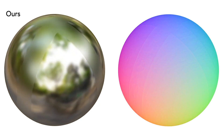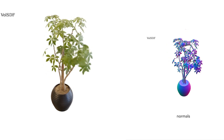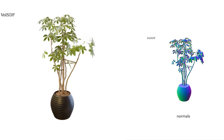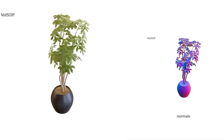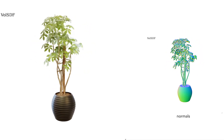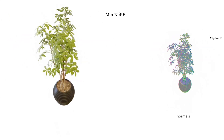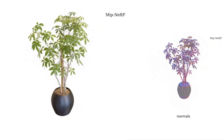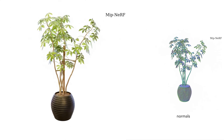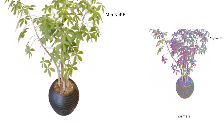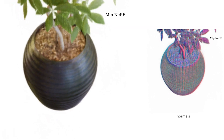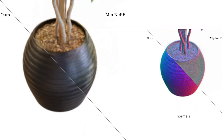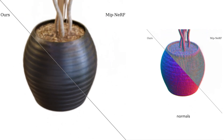Now let's take a look at some more results and comparisons. VolSDF, a recent method that uses a hybrid surface and volume representation, is able to capture smooth surfaces but lacks fine geometric detail. On the other hand, Mipnerf can represent detailed geometry but struggles to render specularities like on this plant's pot. Our method renders consistent specularities while also preserving fine details.